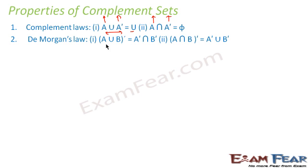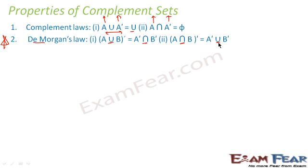De Morgan's law also holds. When you say (A union B) complement, this equals A complement intersection B complement. Similarly, (A intersection B) complement equals A complement union B complement. This is a very crucial law — when you remove the brackets, the sign changes from union to intersection and intersection to union.